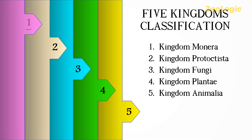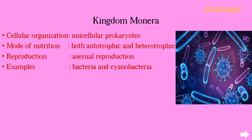Kingdom Monera includes all unicellular prokaryotes — 'uni' means one, so they are single-celled prokaryotes. The term prokaryote comprises two words: 'pro' means first and 'karyote' means nucleus. A primitive type of nucleus is present within these cells, meaning only nuclear material — genetic material — is present, with no defined nucleus. The genetic material is not enclosed within a proper nuclear membrane; it floats freely within the cell.